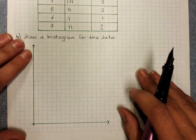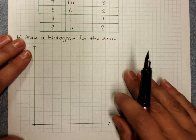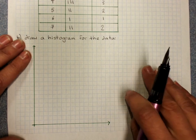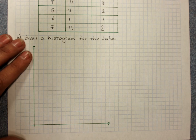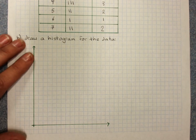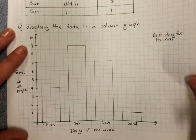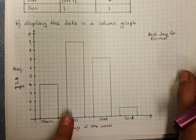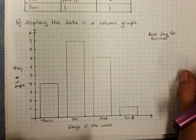Now we're asked to draw a histogram. There's differences in how we display numerical and categorical data. A histogram is very like the column graph that we drew for categorical data. But the only real difference is there's no gap between the columns for a histogram.